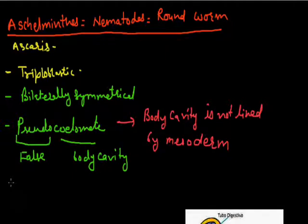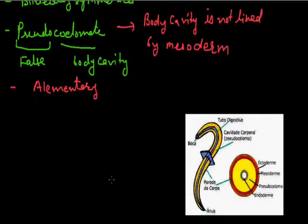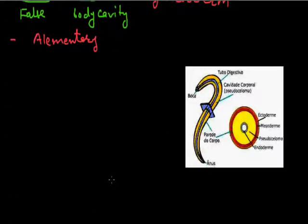These animals have an alimentary canal with both ends — mouth and anus — so they have a complete alimentary canal which performs digestion. However, there is no need for digestion because these animals are parasitic in mode of nutrition. There is no circulatory system in these animals.